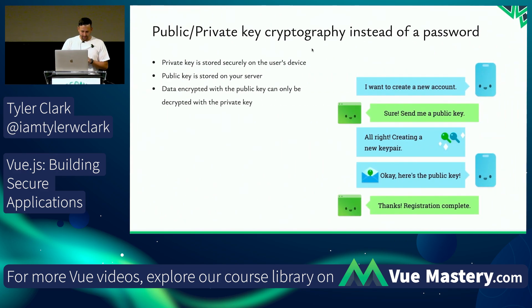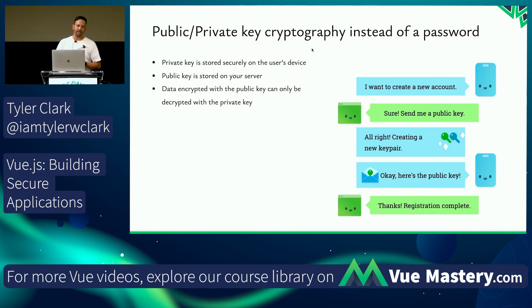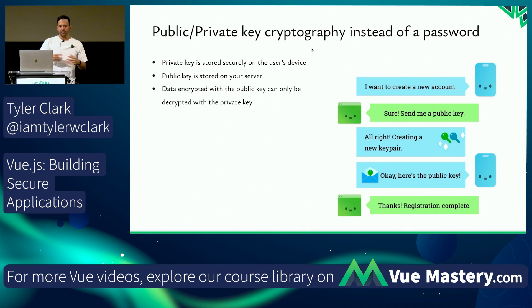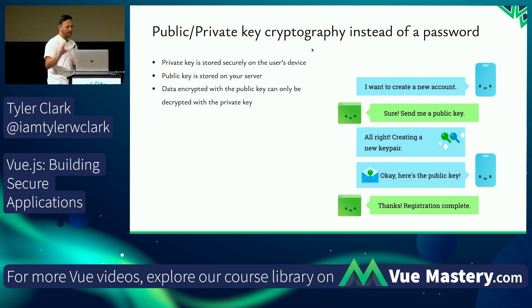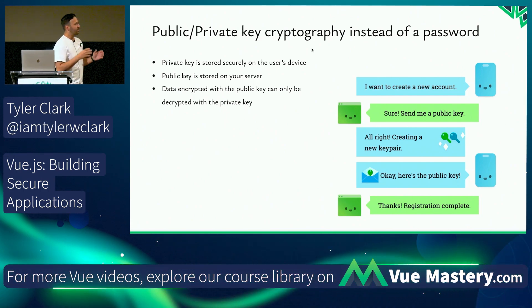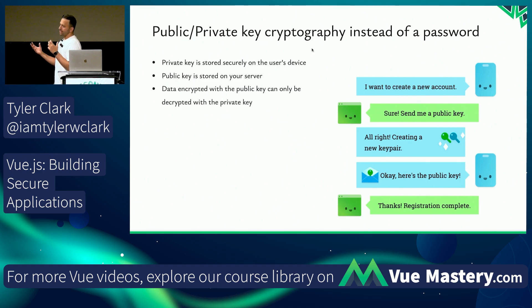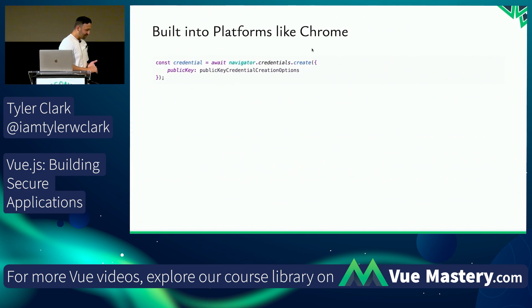How does it work? Instead of using a password, your browser or platform — a phone, whatever it is — creates a public-private key pair using cryptography, and that's used instead of a password. The private key is stored on the device like the user's browser or computer; the public key is stored by your server as the developer. Those two keys work together to authenticate and log users in.